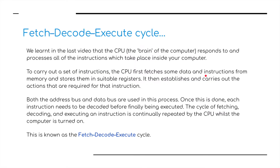So we're going to start with the fetch, decode, and execute cycle. We learned in the last video that the CPU — the brains of the computer — responds to and processes all of the instructions which take place inside of your computer. To carry out a set of instructions, the CPU first fetches some data and instructions from the memory and stores them in a suitable register. It then establishes and carries out the actions that are required for the instruction.